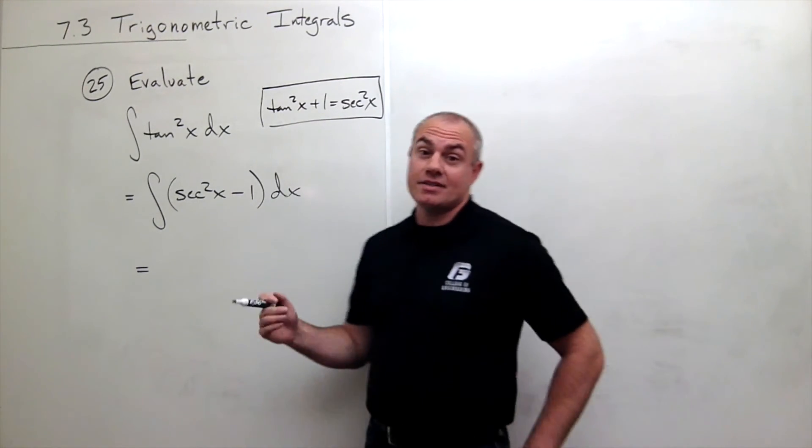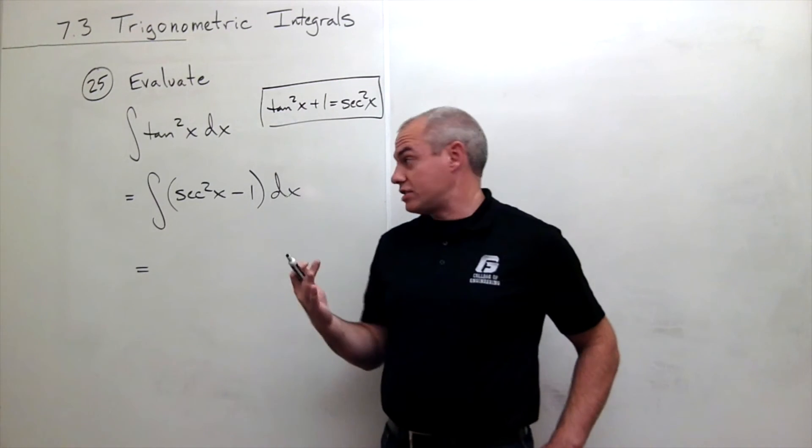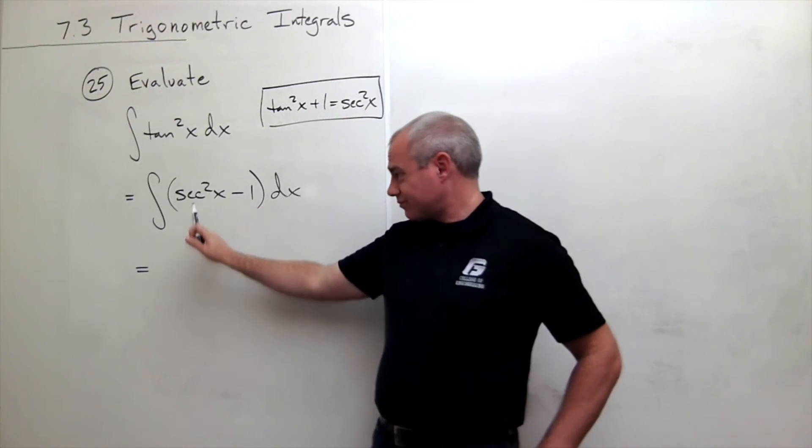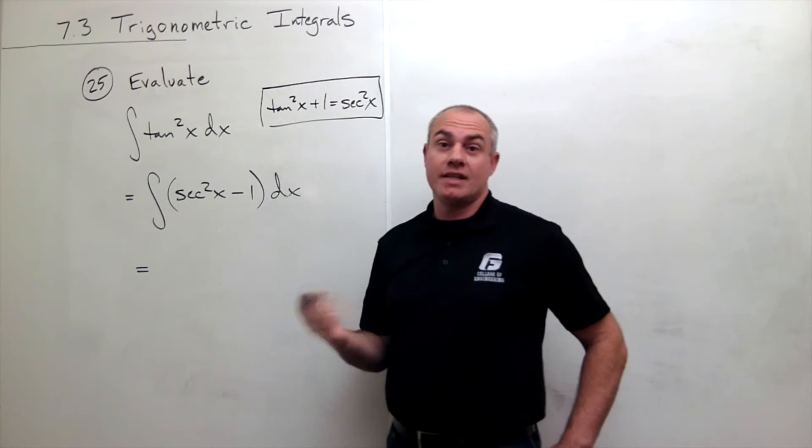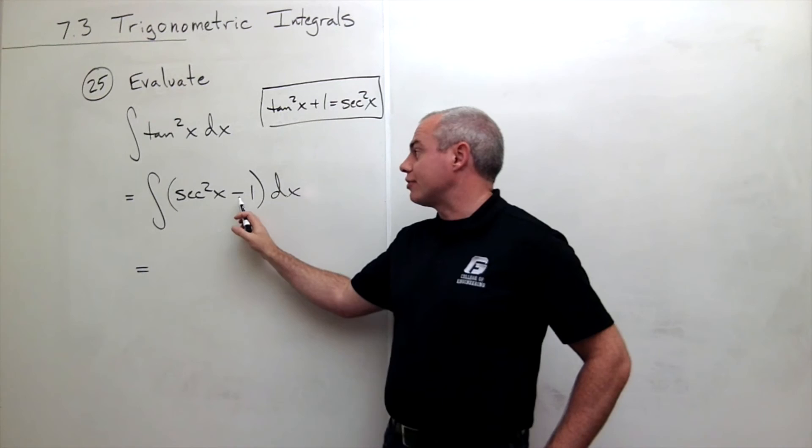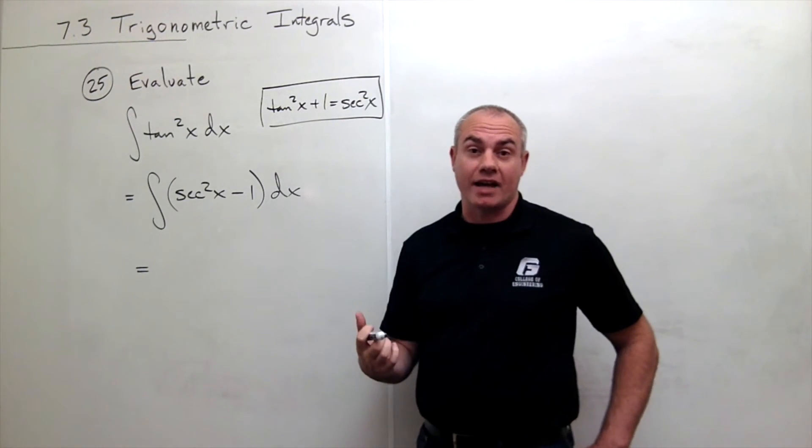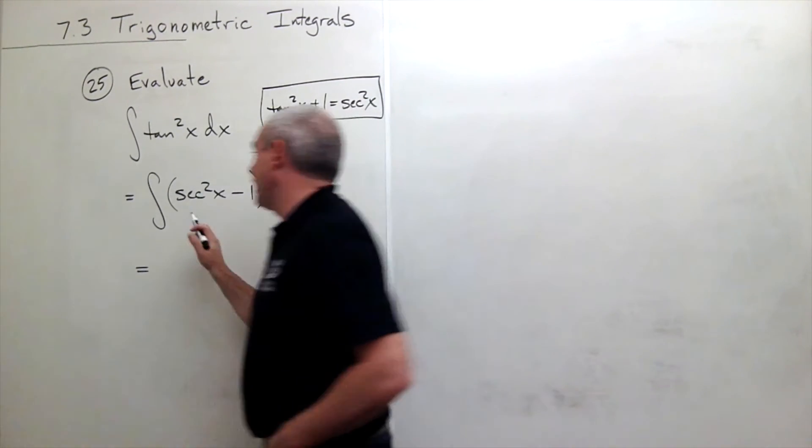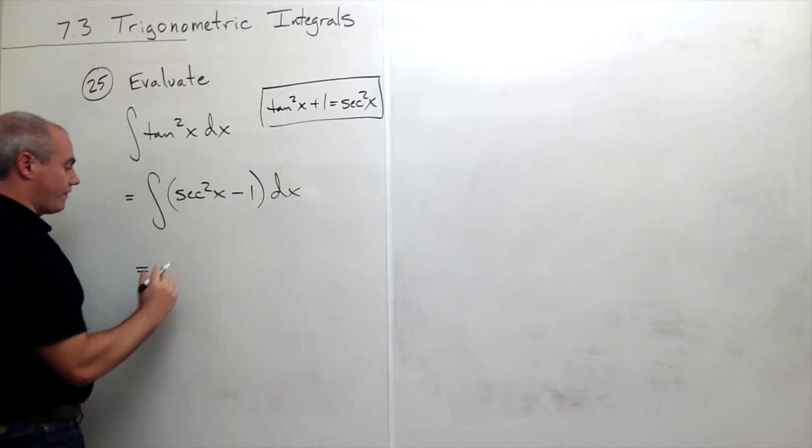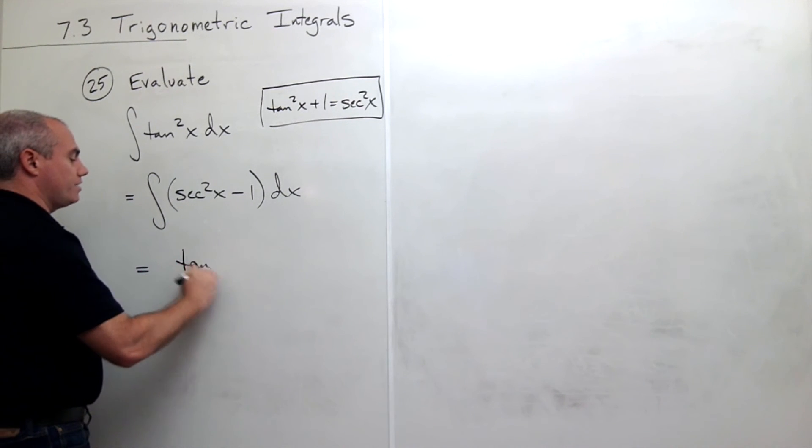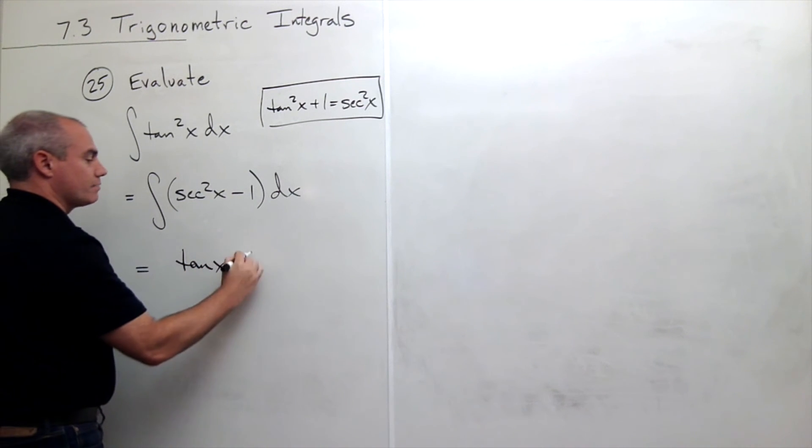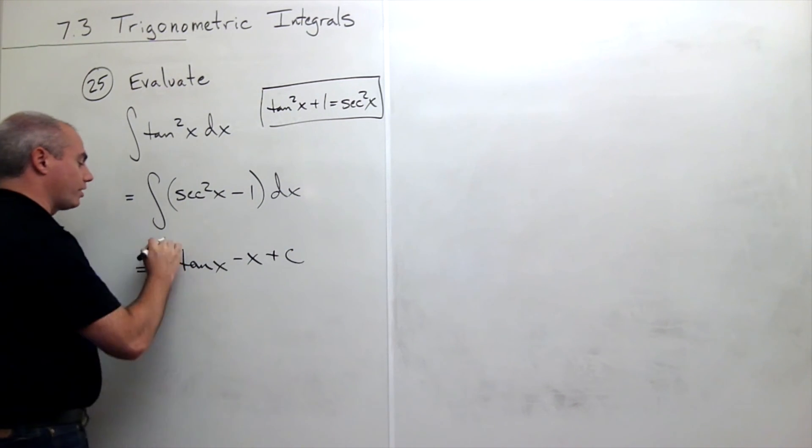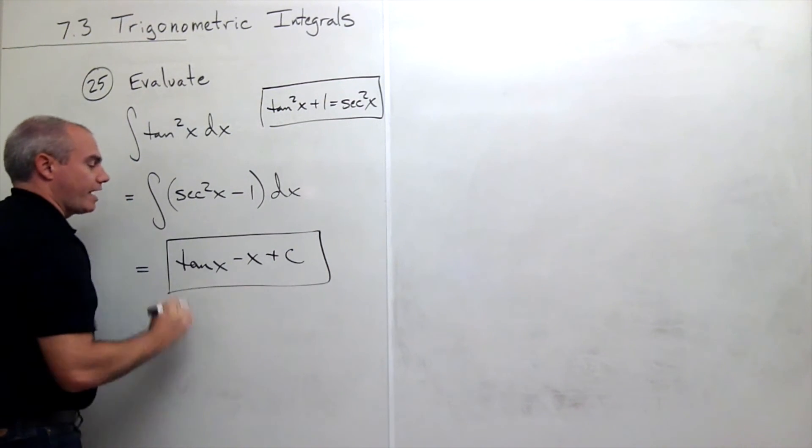And in this case the answer is yeah, I can just take the antiderivative because I know the antiderivative of secant squared of x is just tan x and the antiderivative of negative one is negative x. Antiderivative of secant squared of x is tangent x, antiderivative of negative one is minus x, and then we have to add our constant of integration and we have our antiderivative.